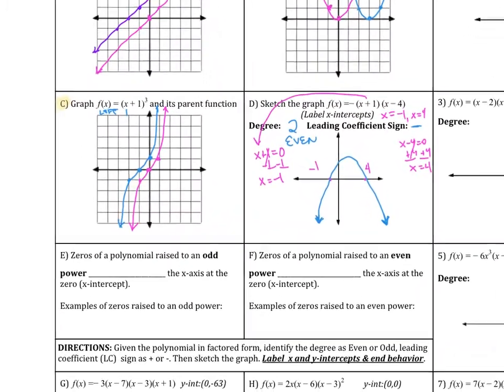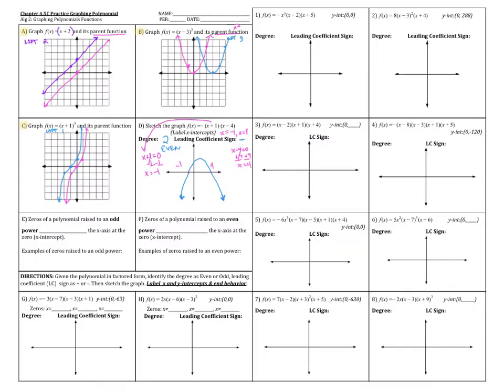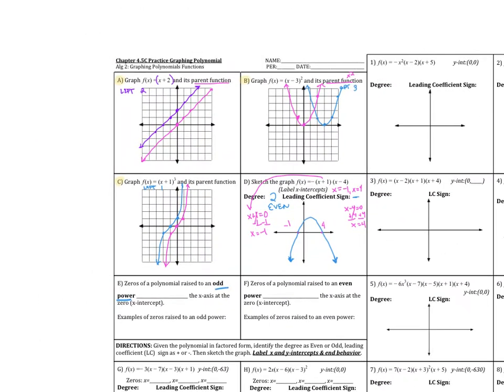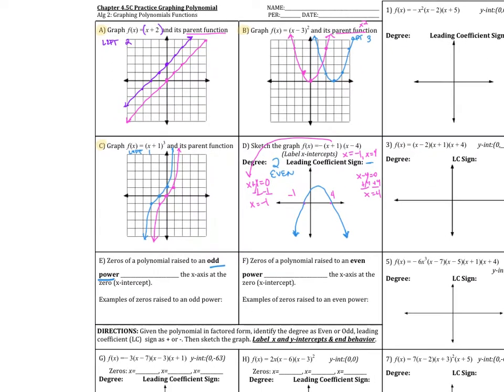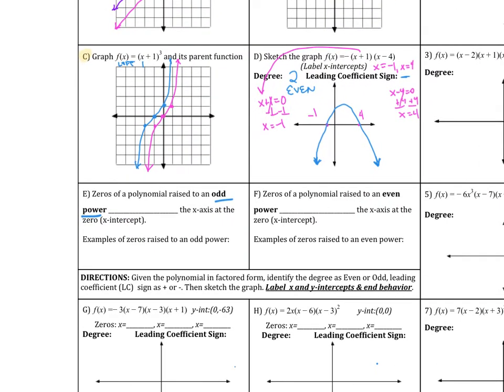Now I'd like to emphasize E and F. Zeros of a polynomial raised to an odd power, like letter A and letter B, they're raised to an odd power, raised to the power of 1, raised to the power of 3, then the graph crosses the x-axis at that zero.